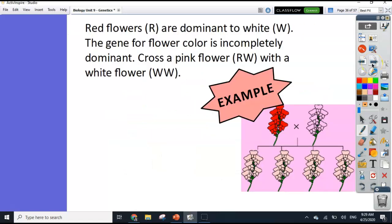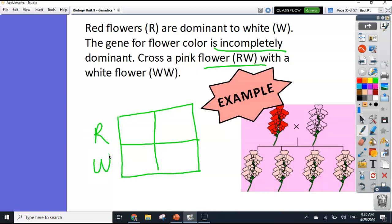Let's do an example. Red flowers are dominant to white. The gene for flower color is incompletely dominant, meaning it blends. Cross a pink flower with a white flower. So again, we need to do a punnett square. So we're trying to figure out what percentage are going to be pink, white, and red. So it says our one parent's pink. So put that either on the side or on the top. Remember, it doesn't matter if you put that down the side or on the top. White flower I'm going to put on the top. And then we're going to fill in our square. So here we have our W, W, W, W, and W, W.